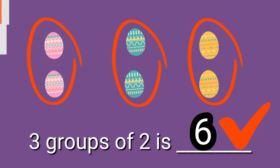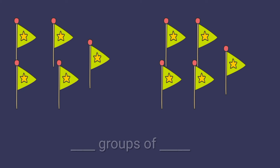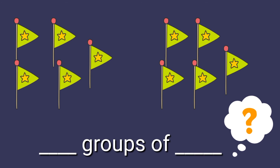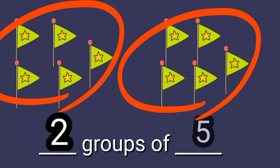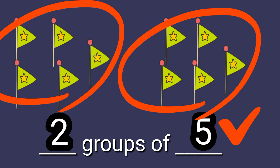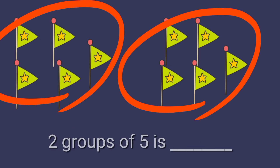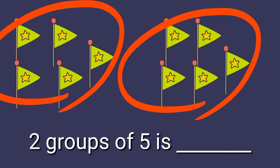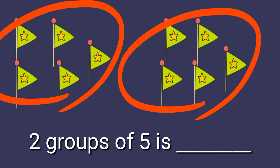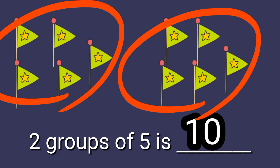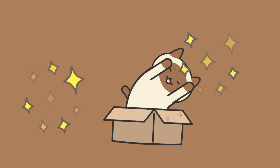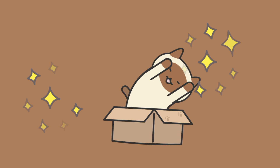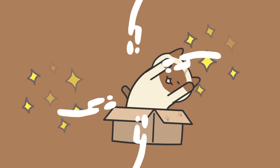Correct! Two groups of five, right? Two groups of five is ten. Correct! Good job, kids! Now you know about making equal groups and counting objects. Thank you for listening.